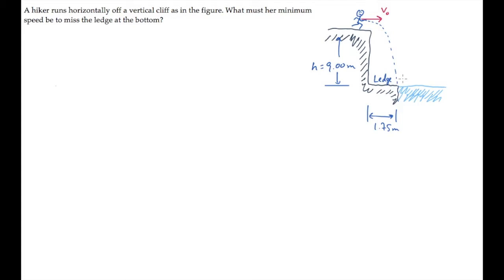We'll find the time she's in the air from this kinematic equation. Delta y is v0y times t minus 1 half gt squared. The initial y component of velocity is zero because initially she's running horizontally. Delta y, the displacement, as she moves from the top of the cliff to the bottom of the ledge is minus h. She moves down a distance h equal to the cliff's height.